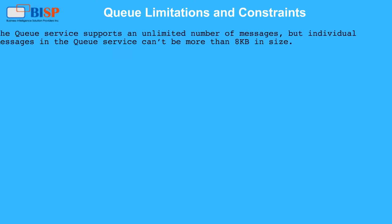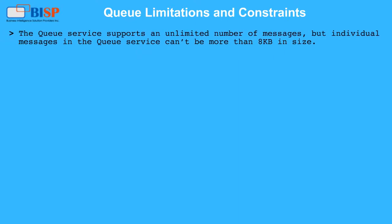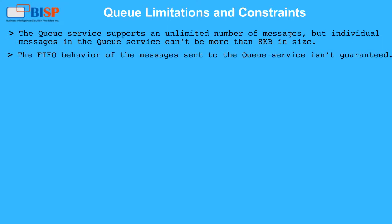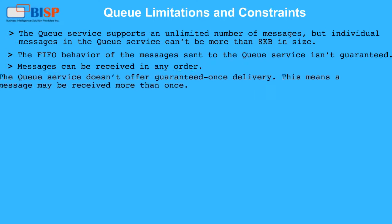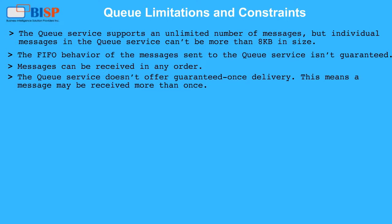Queue Limitations and Constraints: The queue service supports an unlimited number of messages, but individual messages in the queue service cannot be more than 8 KB in size. The FIFO behavior of messages sent to the queue service is not guaranteed — messages can be received in any order. The queue service does not offer guaranteed once-only delivery, meaning a message may be received more than once.